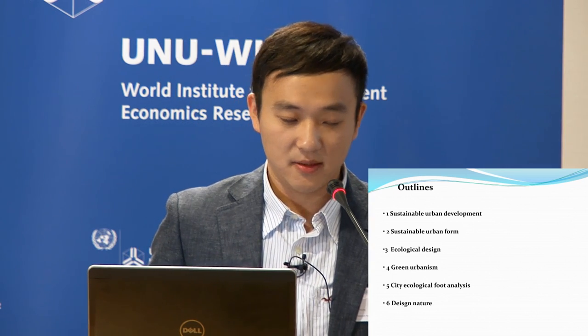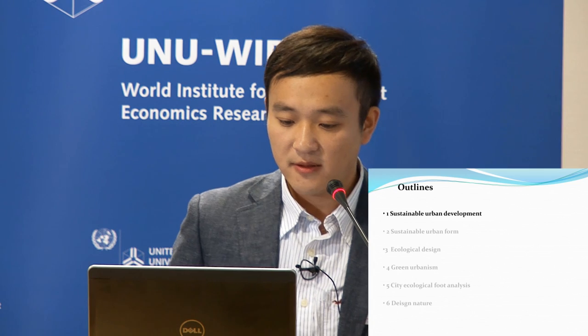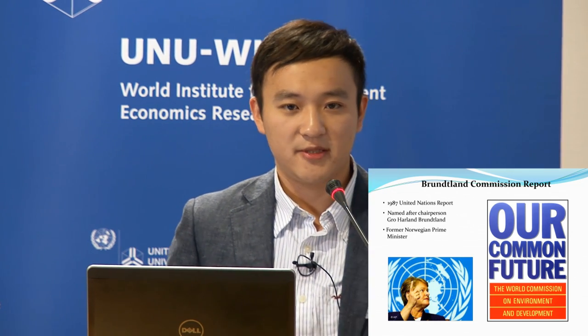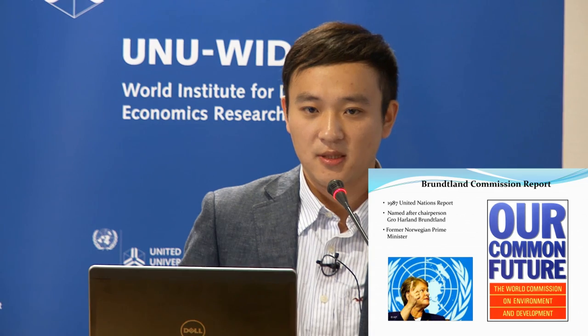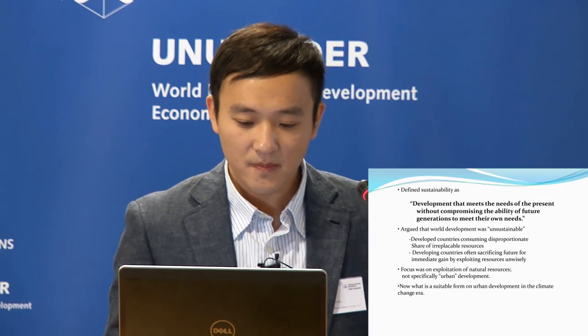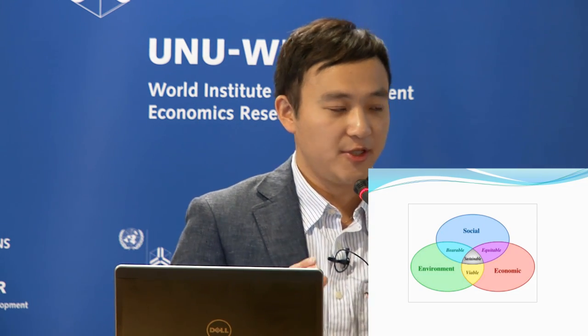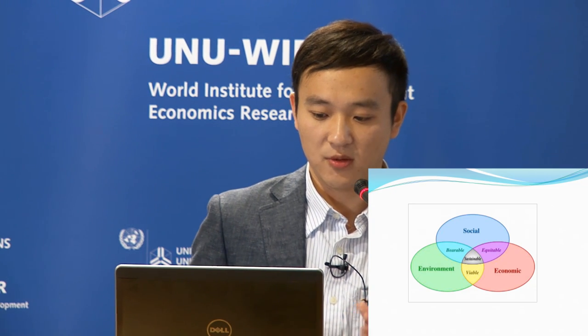This is the outline of my presentation — I have six topics. The first is sustainable urban development. We are all familiar with the definition of sustainable development, but what does it mean for urban areas? I think there are three dimensions: social development, economic development, and environmental protection. We should not emphasize just one of them; we should consider all three together.